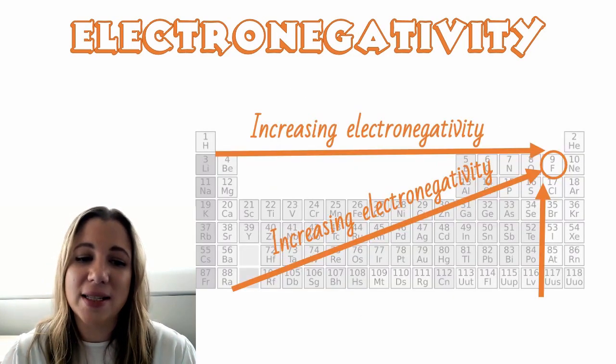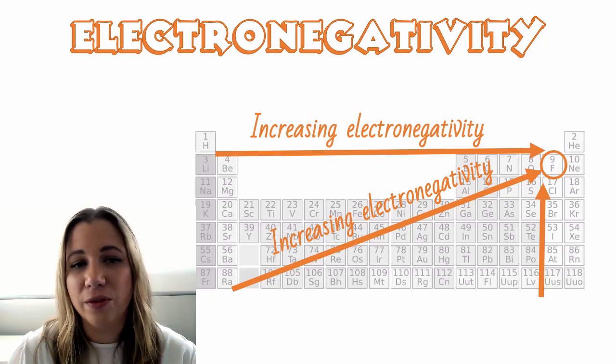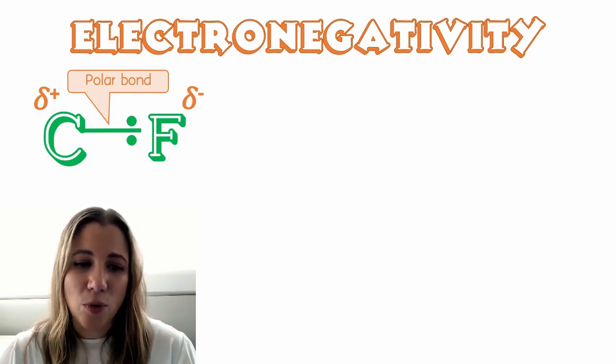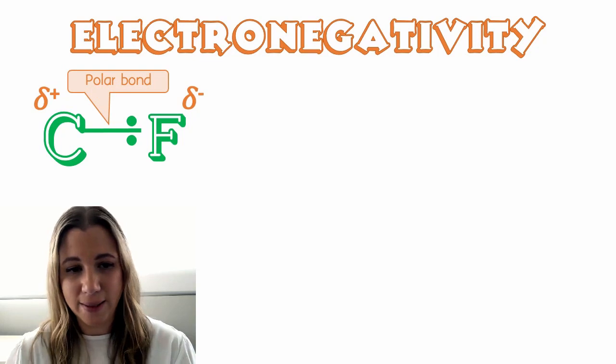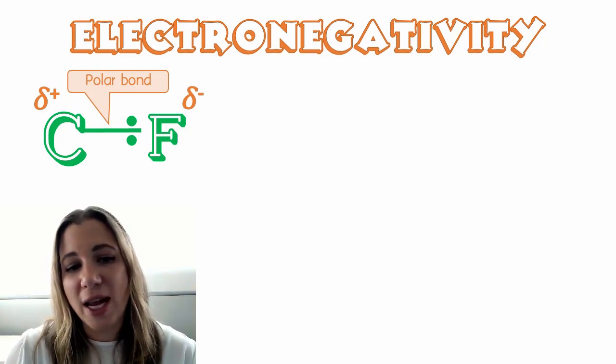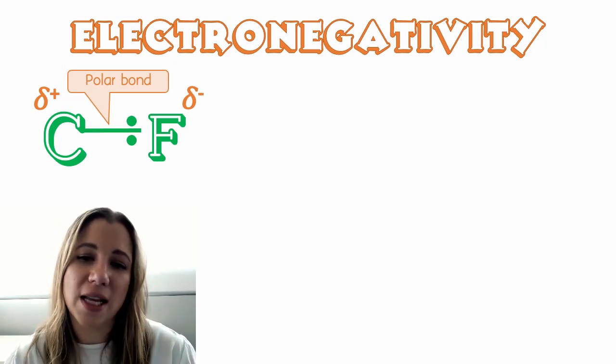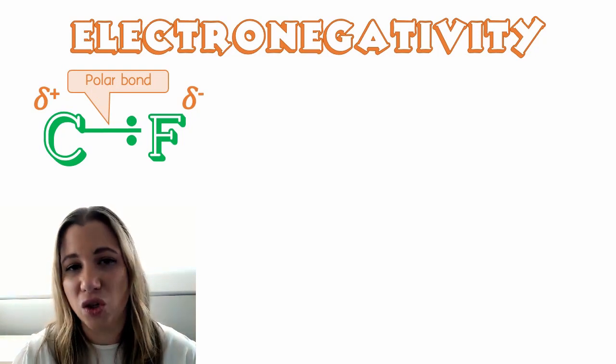Electronegativity increases as you move towards the top right hand corner of the periodic table, with fluorine being the most electronegative element. So here's an example. We can see the relationship between carbon and fluorine when it's bonded covalently. The fluorine atom pulls the shared electron pair more closely to itself. So even though it's a shared pair of electrons, it is not in the middle of the two atoms.